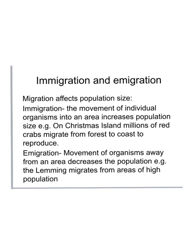Another important variable that affects population size is migration. Immigration is the movement of individual organisms into an area, increasing the population size. For example, on Christmas Island, millions of red crabs migrate from forest to coast to reproduce. Emigration is the movement of organisms away from or out of an area, decreasing the population. For example, the lemming migrates from areas of high population. Many people emigrate from the UK to Australia — meaning they're leaving the UK.